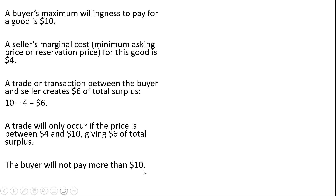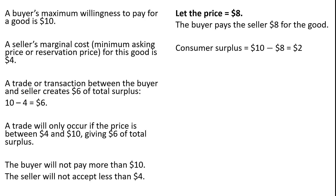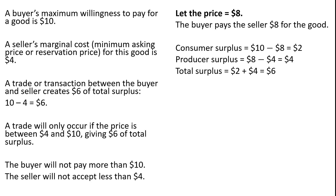The buyer will not pay more than $10. The seller will not accept less than $4. Let the price equal $8. The buyer pays the seller $8 for the good. Consumer surplus is the difference between $10, the consumer's maximum willingness to pay, and the $8 price — this is $2 ($10 minus $8). Producer surplus is the difference between the price the seller gets and the seller's marginal cost: $8 minus $4 gives us $4. Total surplus: $2 plus $4 is $6.